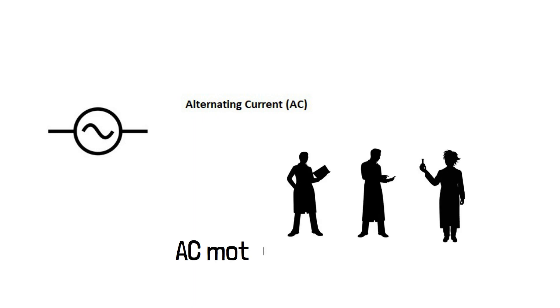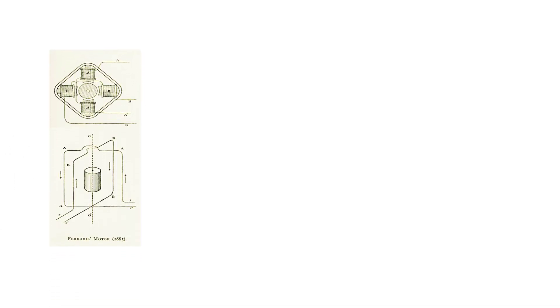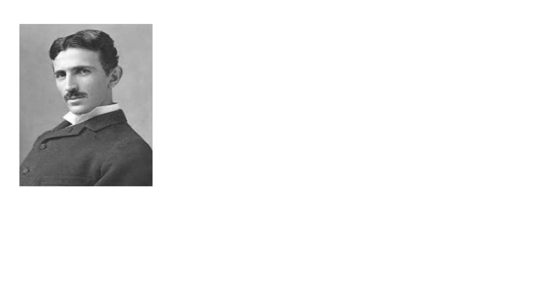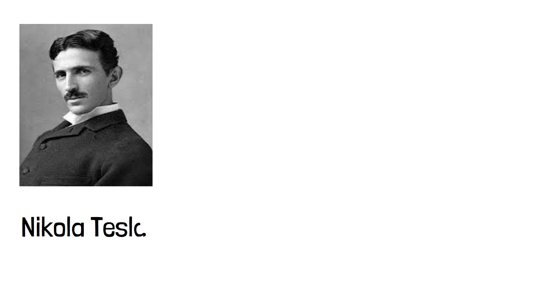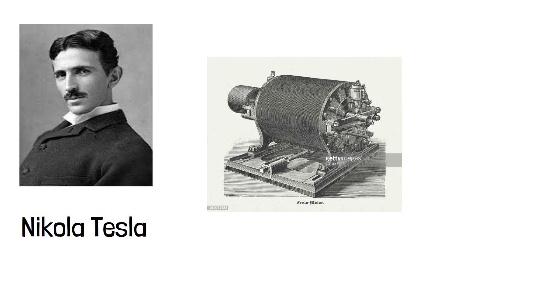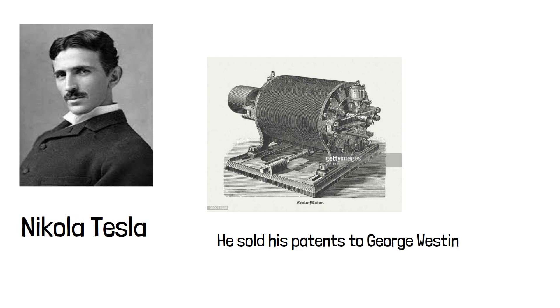With the growing popularity of alternating current, inventors tried to build AC motors. The first commutatorless AC motor was invented by famous physicist Galileo Ferraris in 1885. Famous inventor Nikola Tesla also worked on AC motors and took out his patent — his AC motor was phenomenal at that time. You can see it in the picture. He later sold his patents to George Westinghouse, who also had the rights from Ferraris.